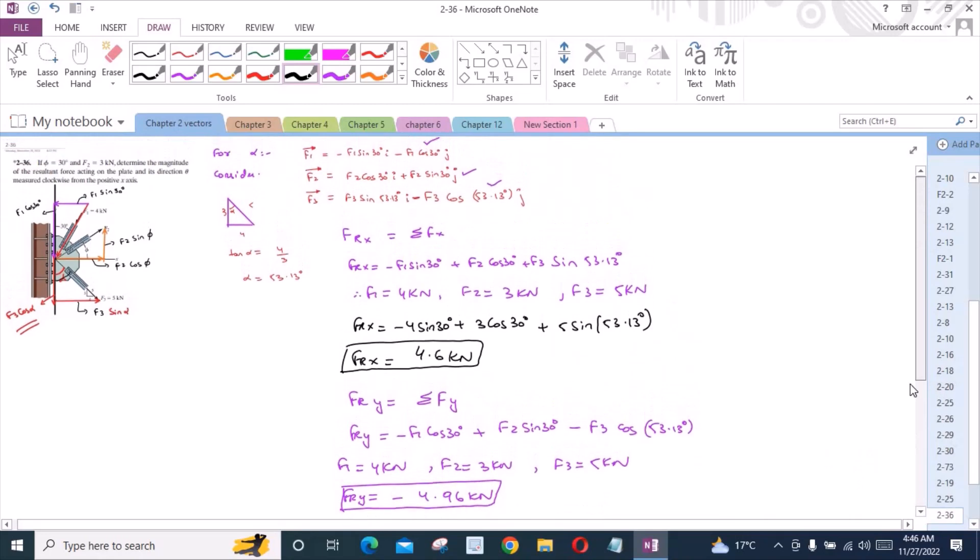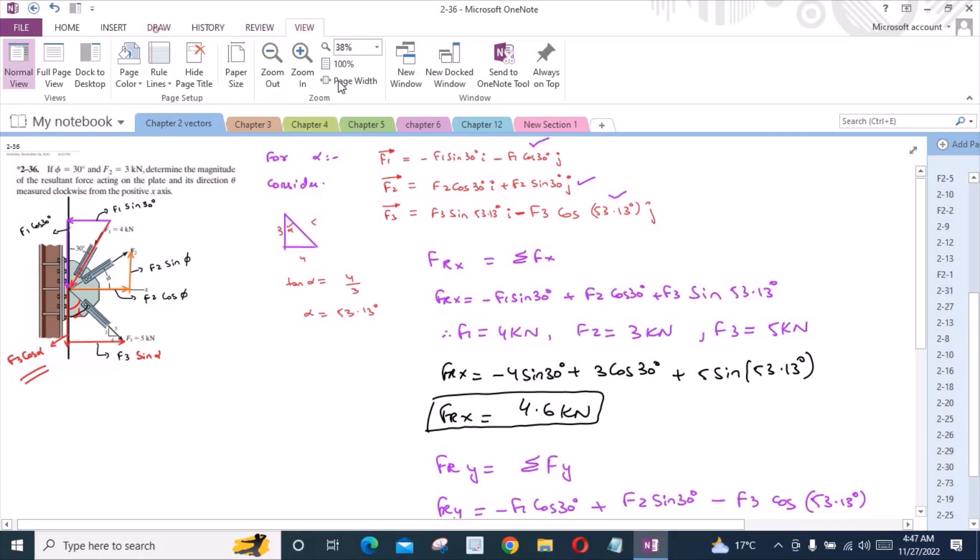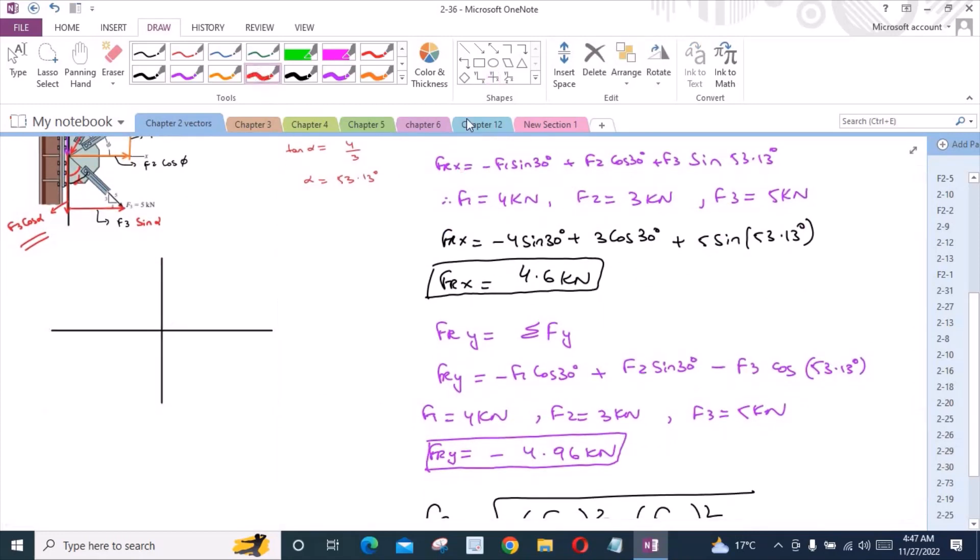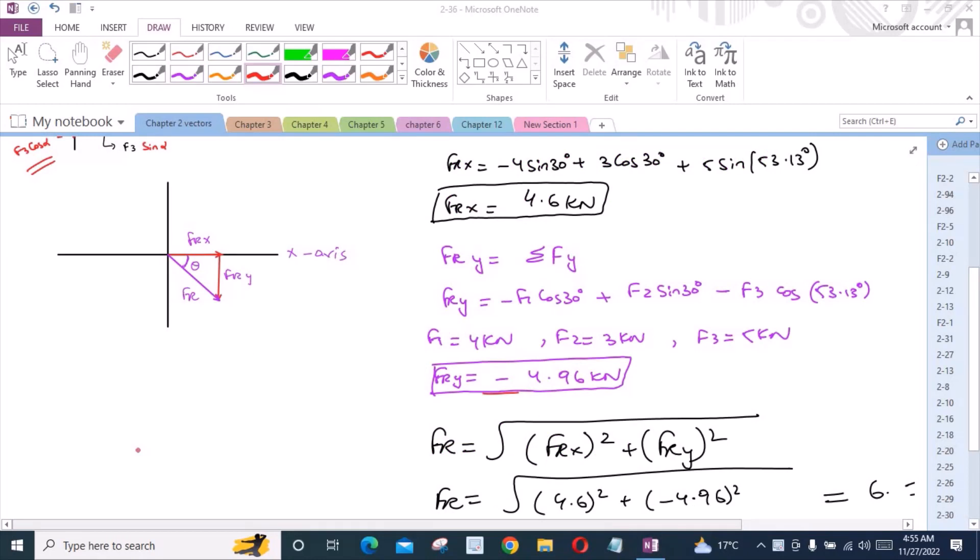Now for the angle theta, if I draw some perpendicular axis right here to show the resultant force, we have FRx and FRy and this is the resultant force. We have to find this angle right here, theta, between the resultant force and the positive x-axis.